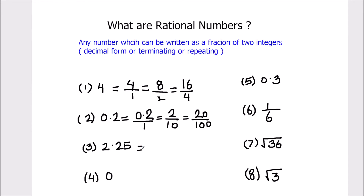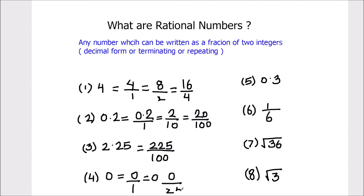Next we have 2.25. It can be written as 225 divided by 100, so it can be represented as a fraction of two integers — it is a rational number. Next is 0. Zero can be written as 0 divided by 1, which equals 0, or as 0 divided by 25, which also equals 0. So 0 is a rational number.